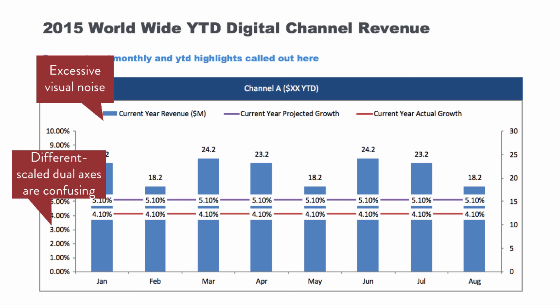I do have a solution for that. And finally, these target lines and labels interrupt the bar graphs. Bar charts require, by nature, that your eye follow them to the base axis in order to be interpreted correctly — that is the entire foundation of how a bar chart is interpreted. When lines and labels interrupt them, you're basically interfering with the absorption of that bar.